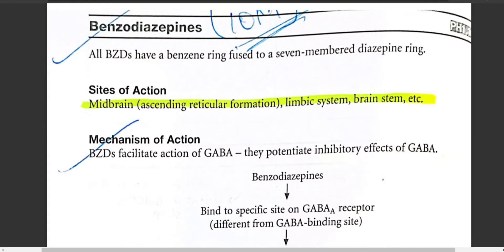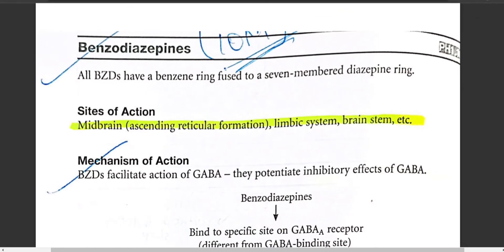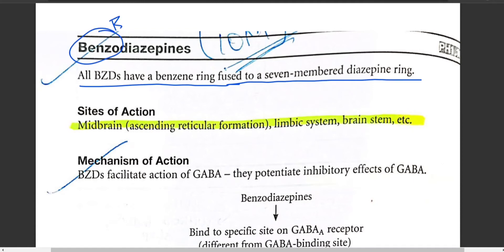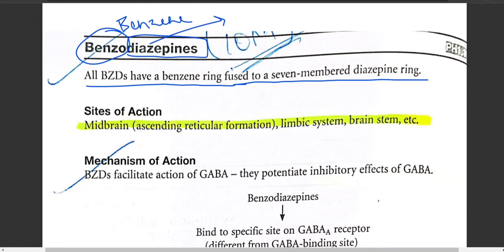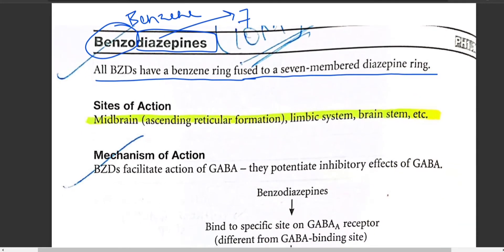This is a session on the benzodiazepines, which is a sub-classification of the sedatives and hypnotics. Benzodiazepines have a benzene ring fused to a seven-member diazepine ring — 'benzo' refers to benzene and 'diazepine' is the seven-membered ring structure. The main sites of action are the mid-brain, limbic system, and brain stem.